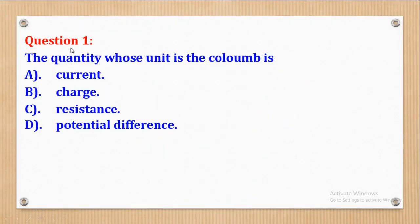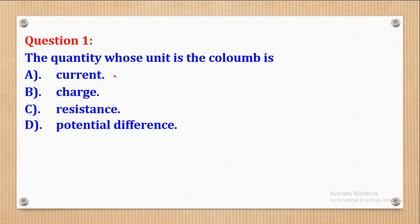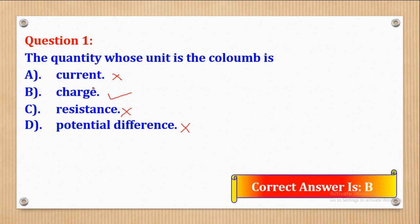Question 1 says that the quantity whose unit is the Coulomb is: A, current; B, charge; C, resistance; and D, potential difference. First, the unit for current is Ampere, not Coulomb, so that is off. The unit for resistance is Ohms, so that is also off. Therefore, the correct answer is B — charge.